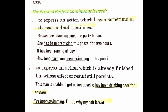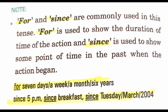Another example: 'I have been swimming, that is why my hair is wet.' Now, one very important thing we need to know is that in this tense we use 'for' and 'since.' 'For' is used to show the duration of time of the action, and 'since' is used to show a definite point of time in the past when the action began.